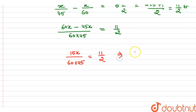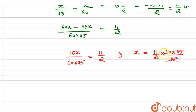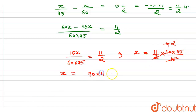Solving for X: X equals 11 by 2 multiplied by 60 into 45 divided by 15. Simplifying, 60 into 45 divided by 15 gives 180, and 180 divided by 2 is 90. So X equals 11 into 90, which equals 990.